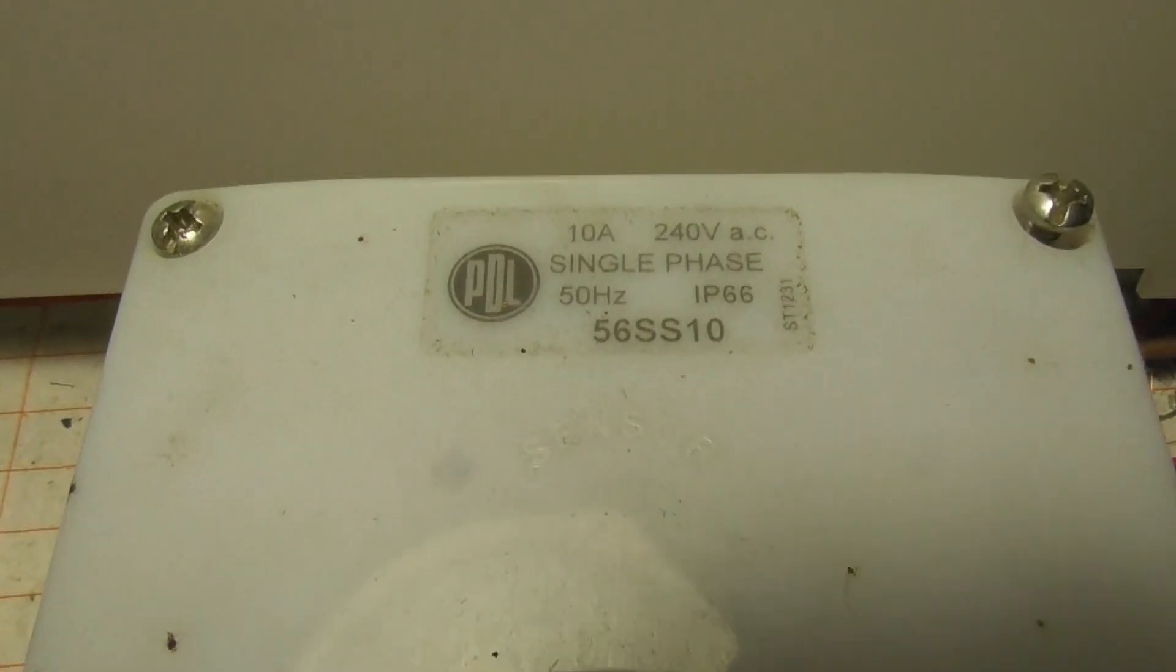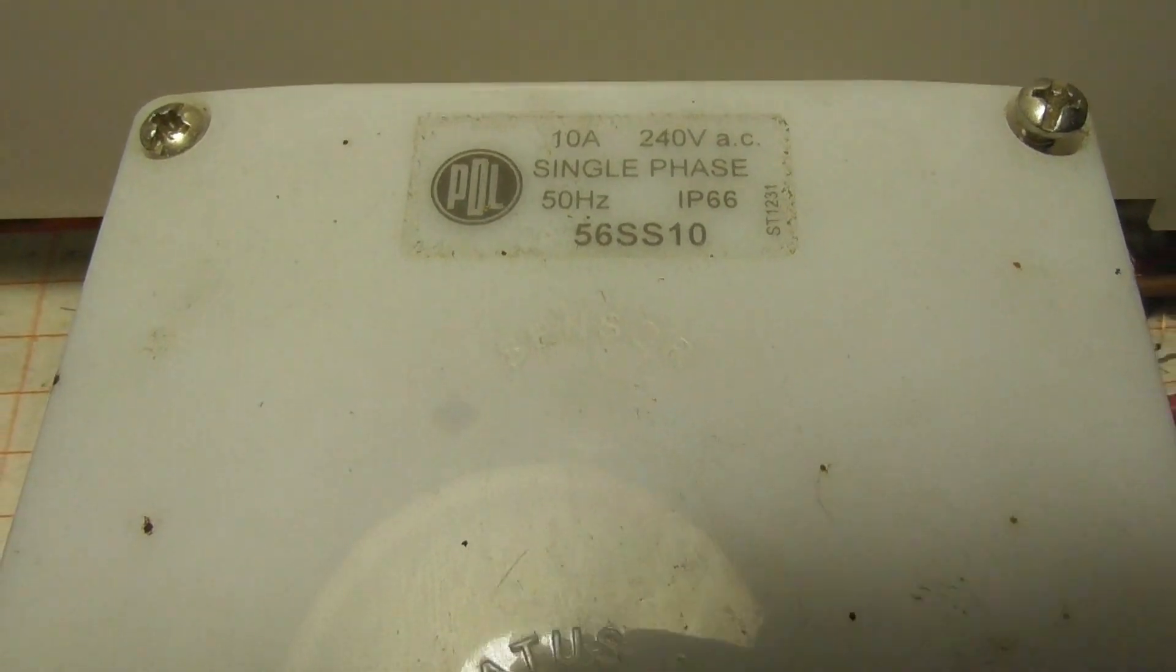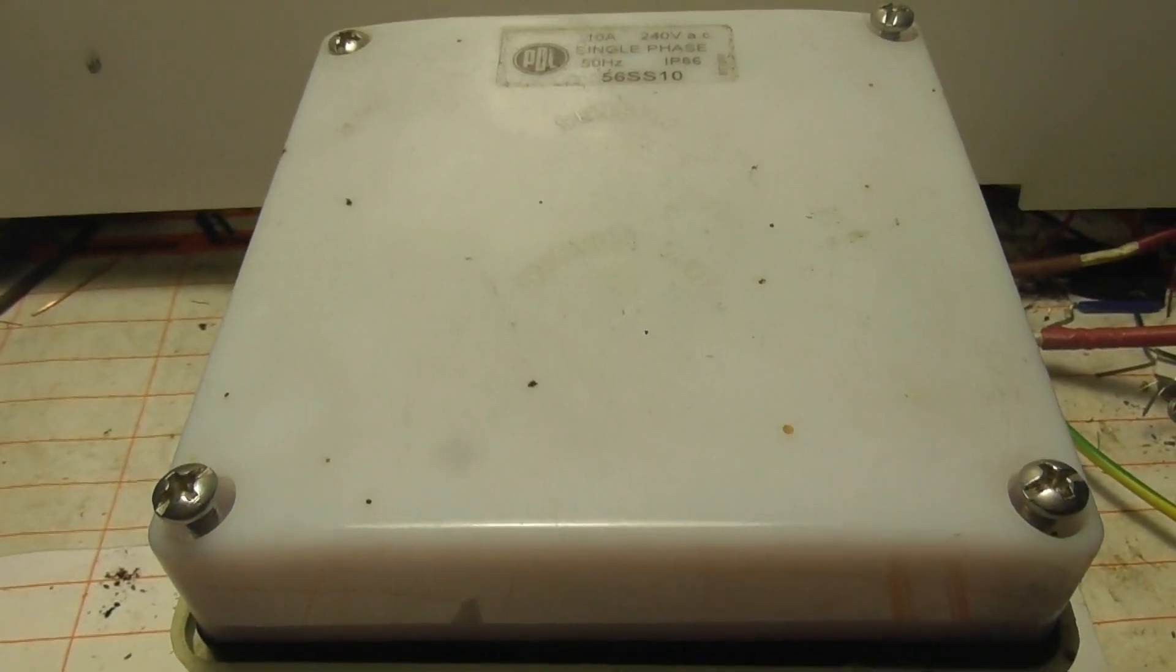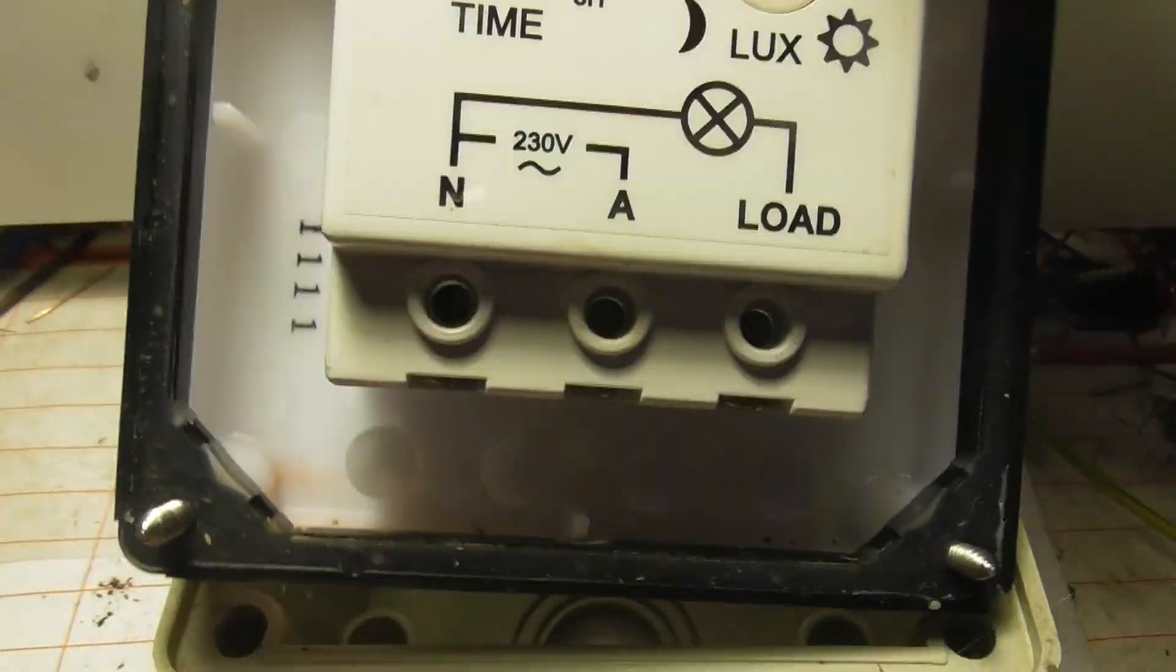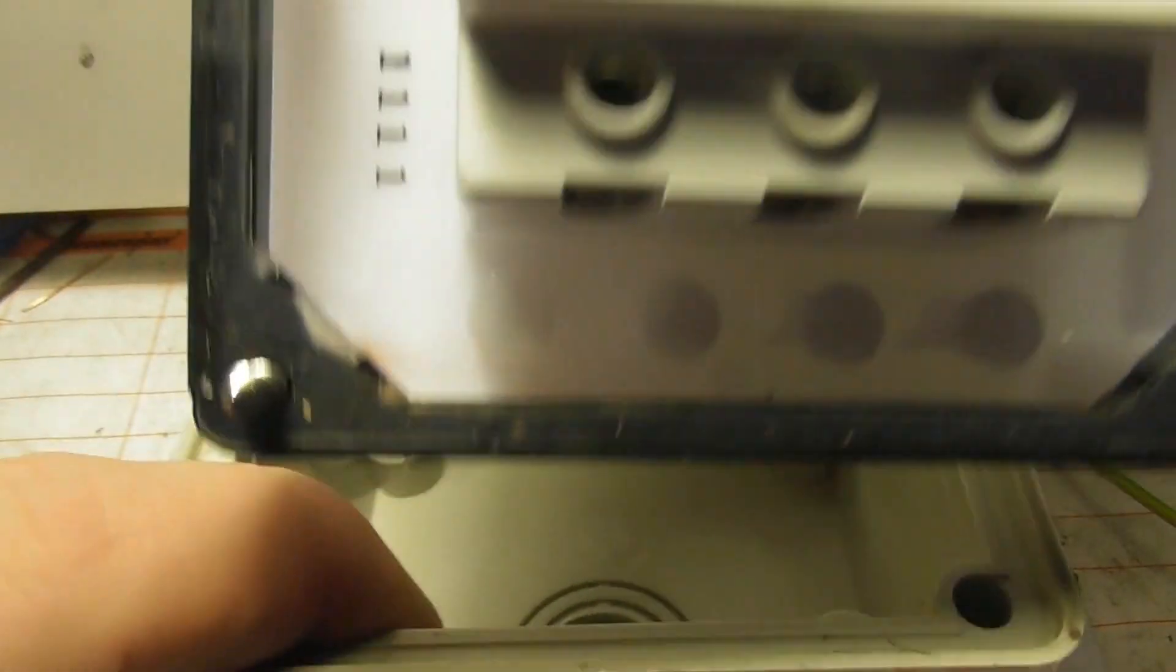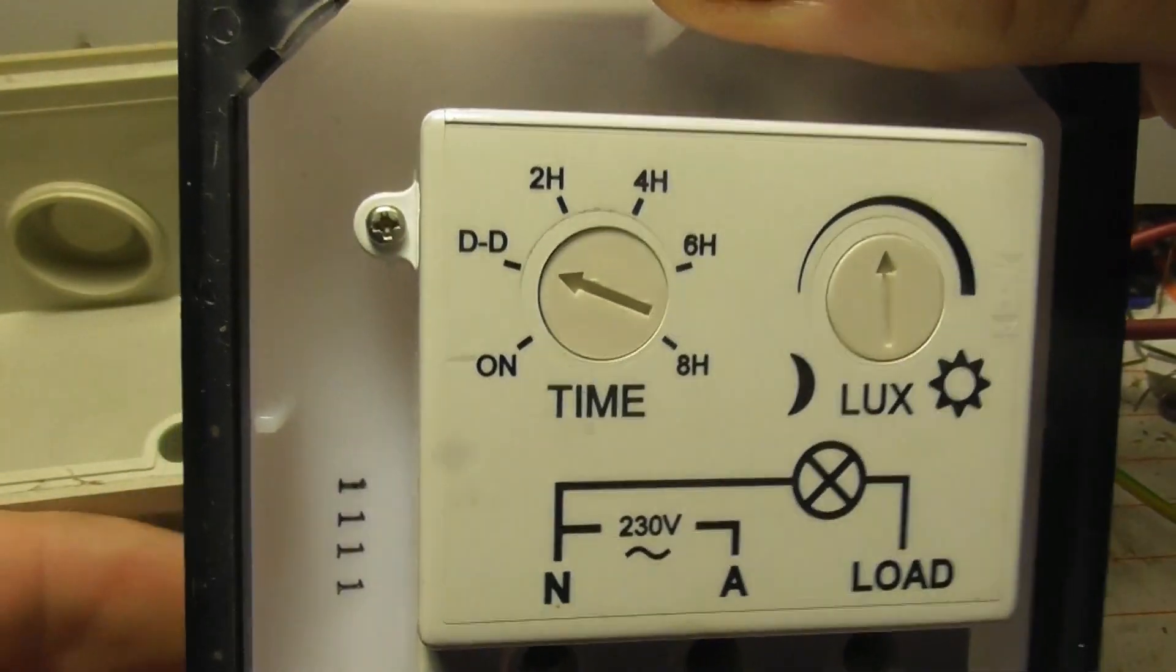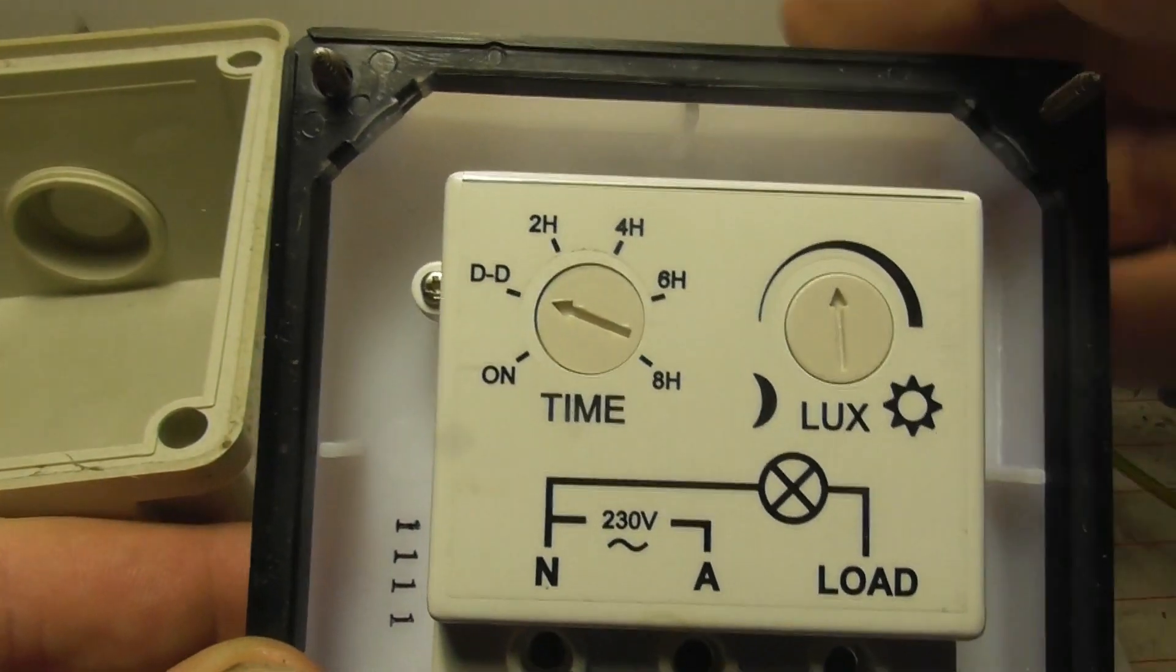This is a little Eye photocell. I've got a few different photocells here. This is a PDL, same principle. This is more expensive and it has an adjustable option in here so you can set the time.